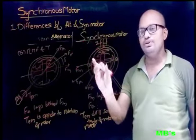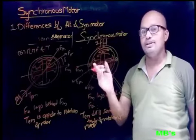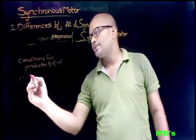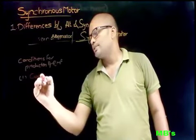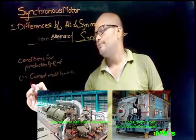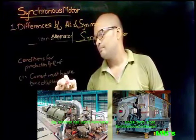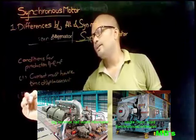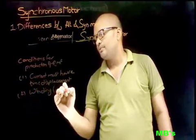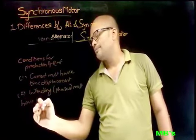There are also conditions for the production of a rotating magnetic field. The first condition is that the currents must have time displacement. The second condition is that the windings — that is, the phases — must have space separation.